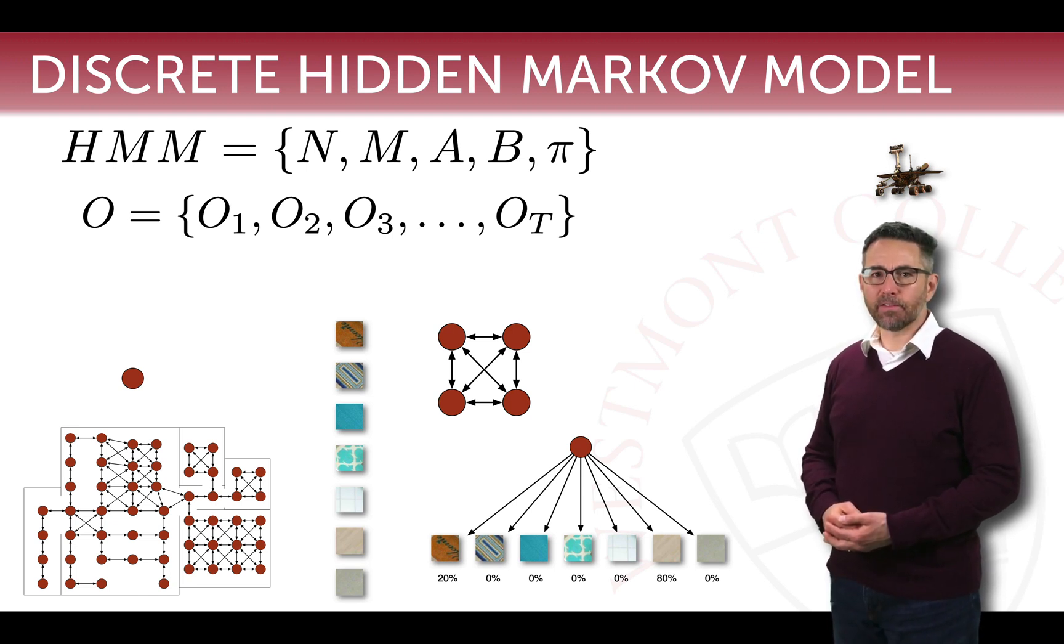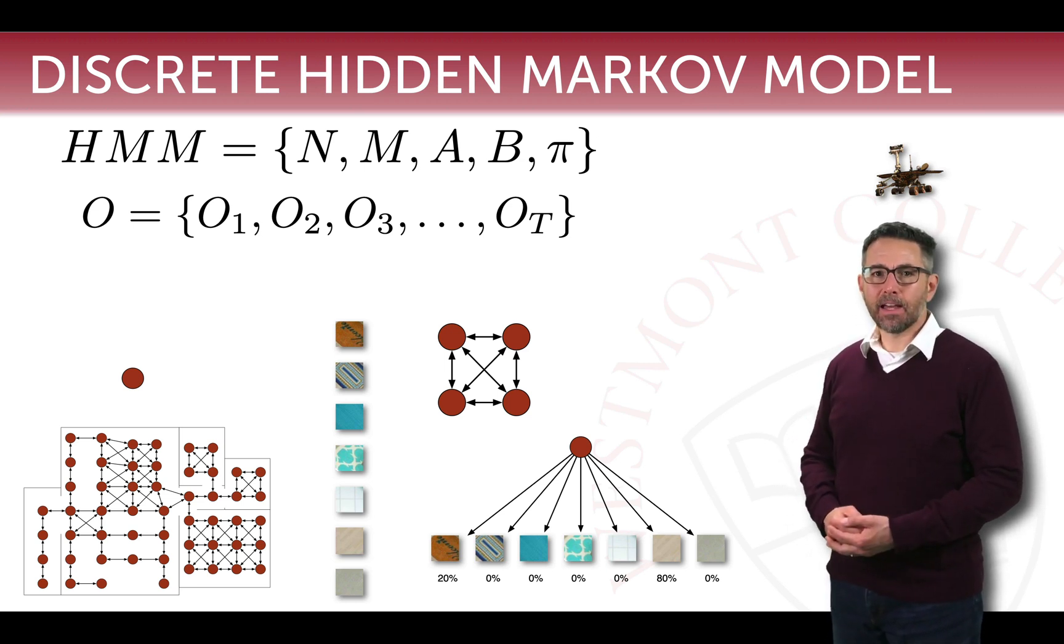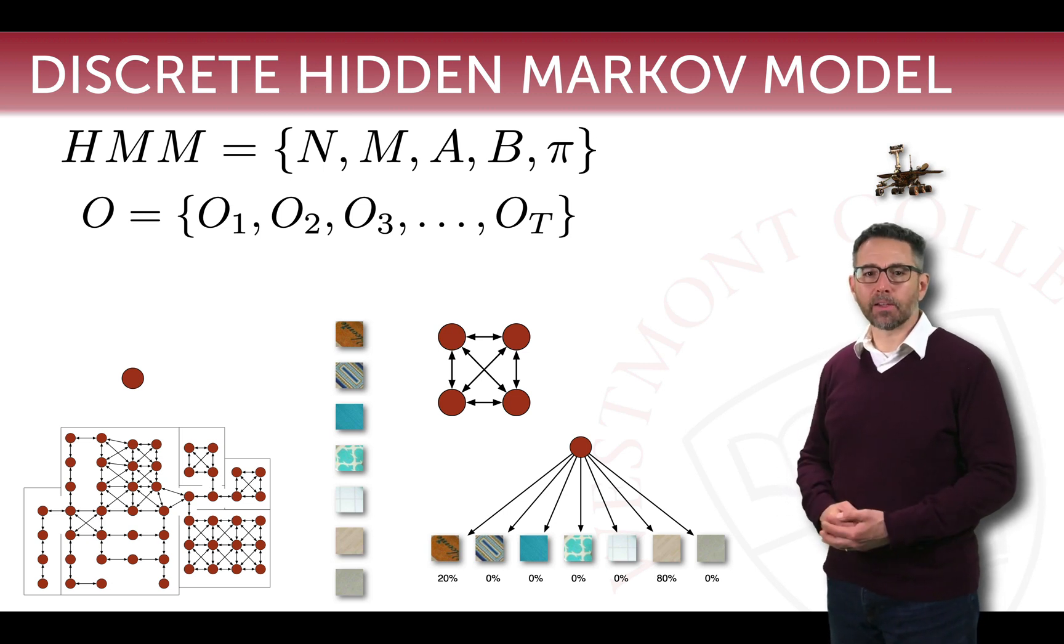n is the number of states that you have, m is the number of observable symbols that you can see, for example floor colorings. a is a transition matrix that says what is the probability of moving from one state to another—it's zero if you can't move from one spot to another.